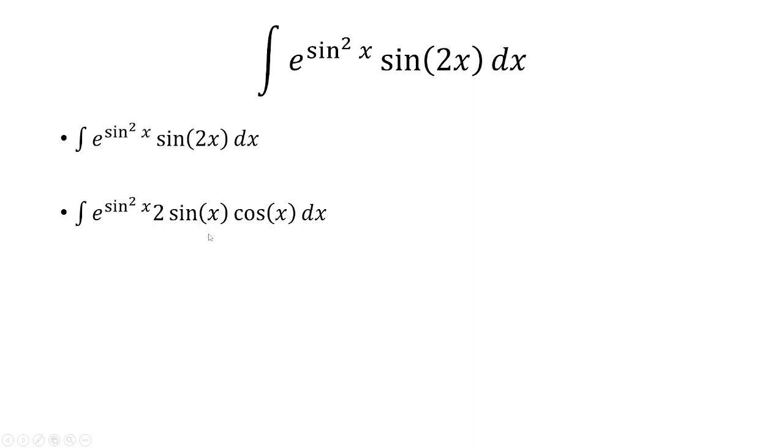And so now we can make a u substitution. We'll let u equal sine squared, so du is 2 sine x times cosine x dx.